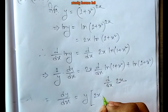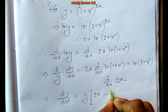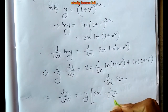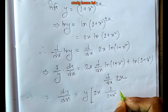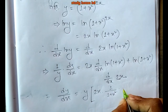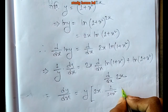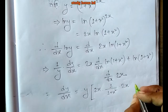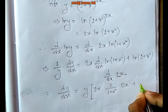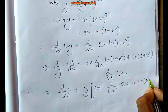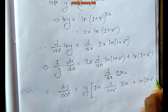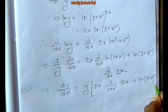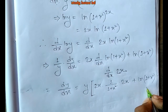On the right side, applying the product rule: d/dx of 2x times ln(1 plus x squared). We get d/dx of ln(1 plus x squared) equals 2x divided by (1 plus x squared). That gives us 2x.